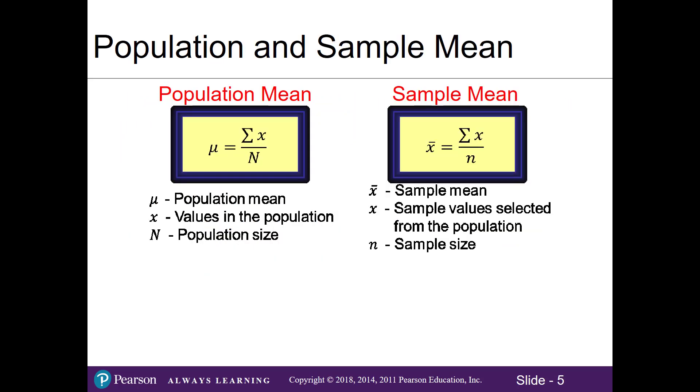Recall in chapter 3 we learned how to calculate the population mean and the sample mean. This is a refresher where we will add up all of our X's and divide by the population size or, if we're doing a sample mean, the sample size.